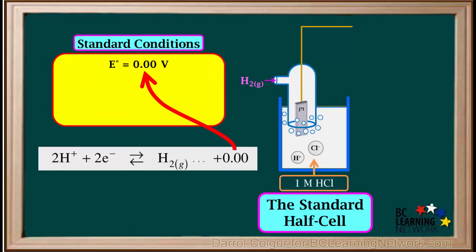This half cell is assigned a reduction potential of 0 volts under standard conditions. The little nought on the E° means standard conditions. At standard conditions, the temperature is 25 degrees Celsius.